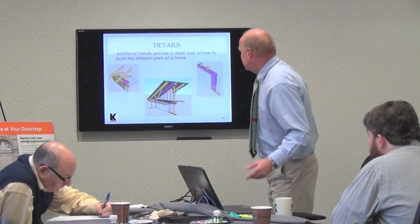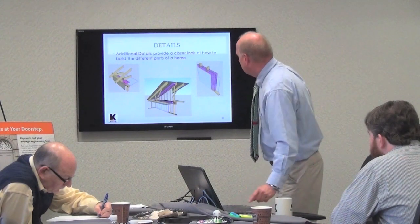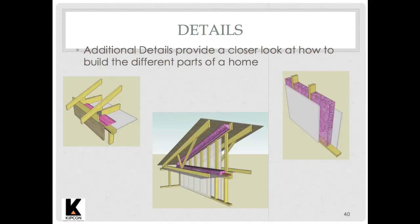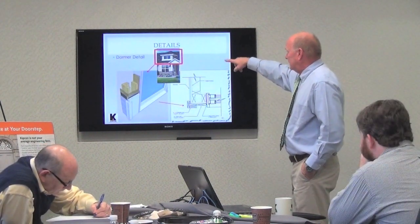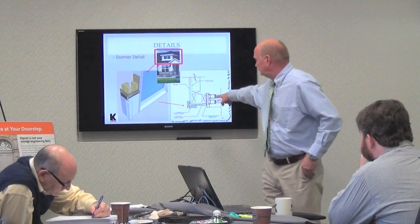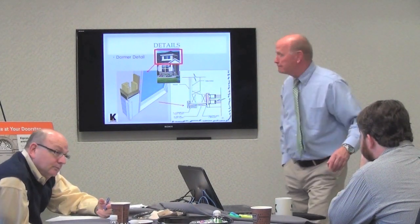Details are just additional information — an additional way that something should be put together. You can see by these 3D drawings that when you're putting these together as a designer, you really do need to know how something gets built. It's a whole lot harder to do this than just a plan view, but it's a whole lot clearer. Just more details — dormer detail, how it's supposed to be laid out.